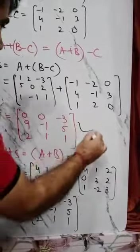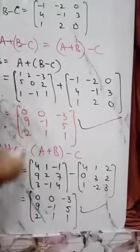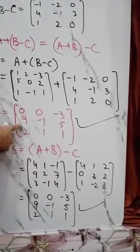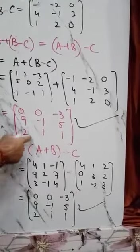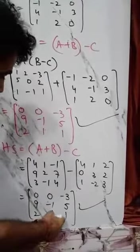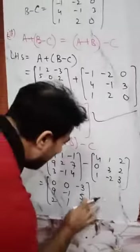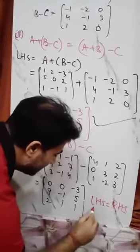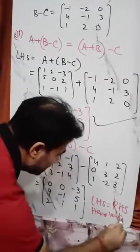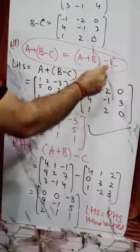Here you see LHS is the same as RHS. LHS: 0, 0, minus 3; 9, minus 1, 5; 2, 1, 1. RHS: 0, 0, minus 3; 9, minus 1, 5; 2, 1, 1. So hence we have proved that LHS is equal to RHS. Hence verified — A plus B minus C is equal to A plus B minus C.